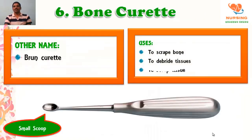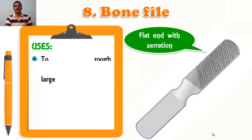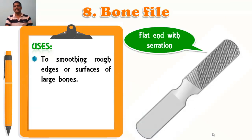Bone curette is used to scrape the bone, to debride tissue, or to scoop the tissue. On the edge you can see a small scoop for easy curettage. Stryker bone saw is used to cut the bones, mainly in amputation surgery. The serrated teeth you can see in a straight line blade.